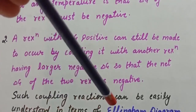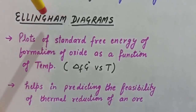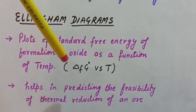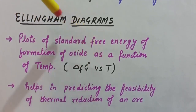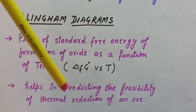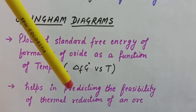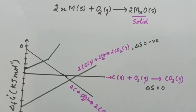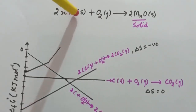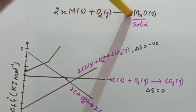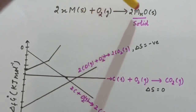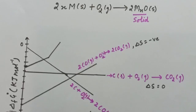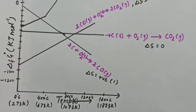Such coupling reactions can be understood using the Ellingham diagram. The Ellingham diagram consists of plots of standard free energy of formation of oxide as a function of temperature — a graphical representation of ΔG of formation of oxide versus temperature. The Ellingham diagram helps in predicting the feasibility of thermal reduction of an ore. During formation of a metal oxide, entropy decreases because a solid metal oxide is formed, so ΔS becomes negative.